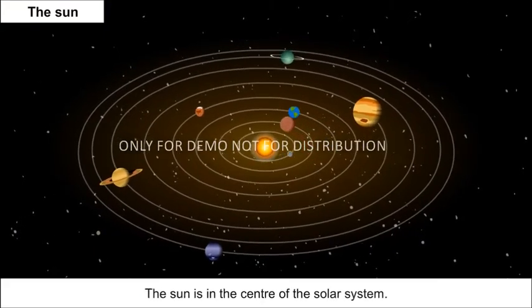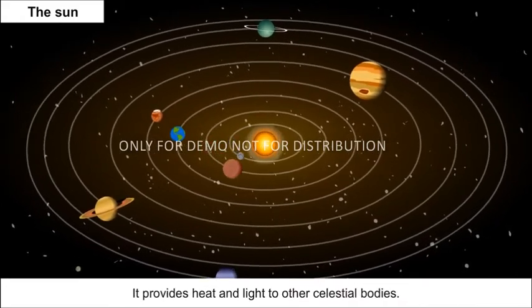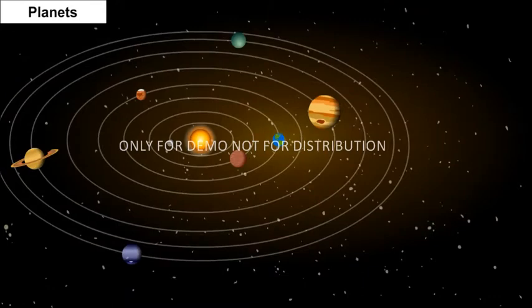The Sun is in the centre of the solar system. It provides heat and light to other celestial bodies. The eight planets in our solar system in order of their distance from the Sun are